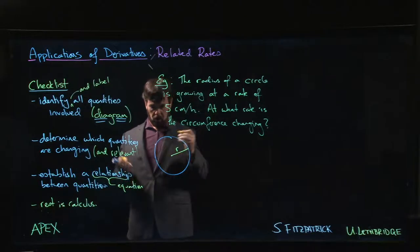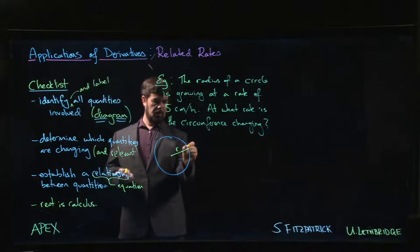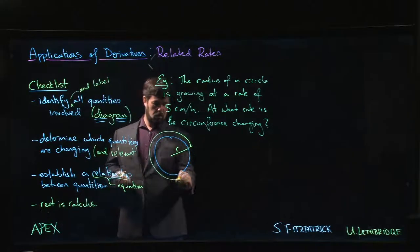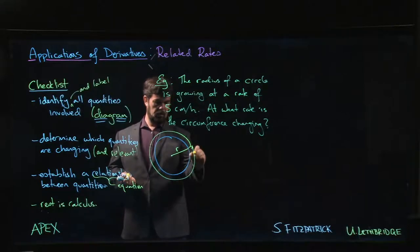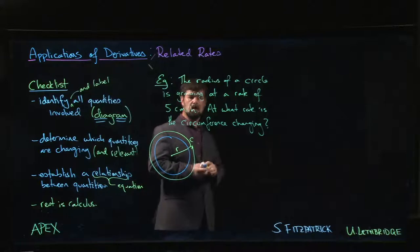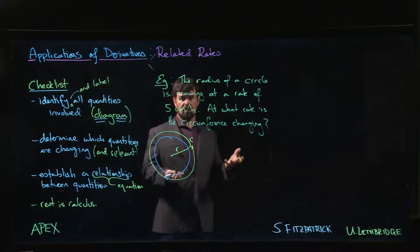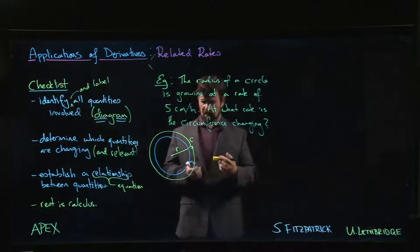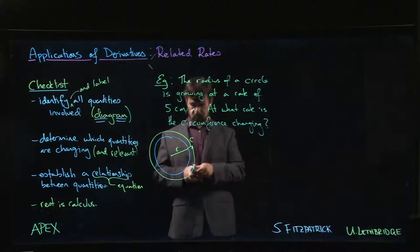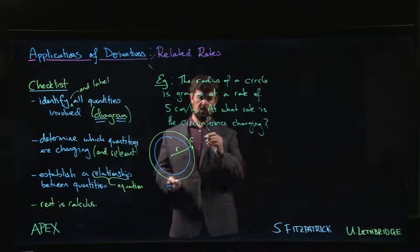What do we know about this circle? Well, we know that it has some radius, so let's call that radius R. We know it has a circumference, this distance all the way around. Call that C. Those are the only quantities that we have involved in this problem - the radius and the circumference. And you probably remember a relationship between the two.